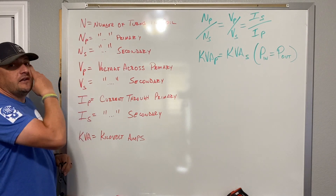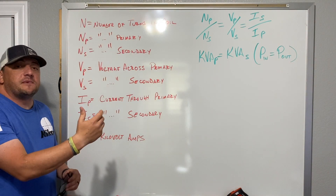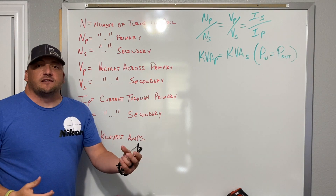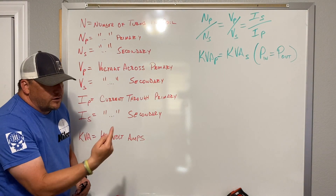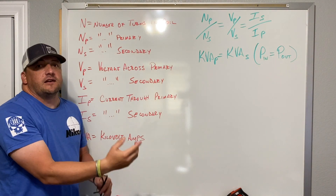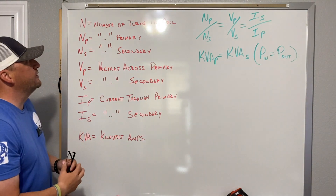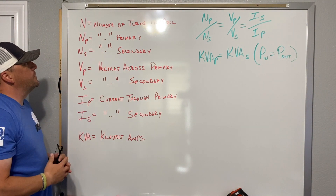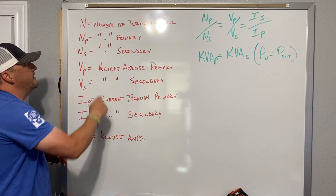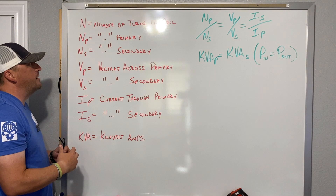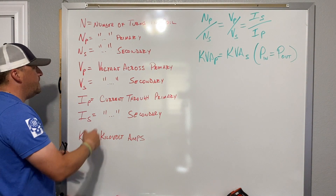So, this capital N is going to be the number of turns in the coil. You've got the primary side and the secondary side of the transformer. That number of turns is how many times that coil in the primary or secondary is physically wound. NP, or N sub P, is going to be the number of turns in the primary, and NS is going to be the number of turns in the secondary.